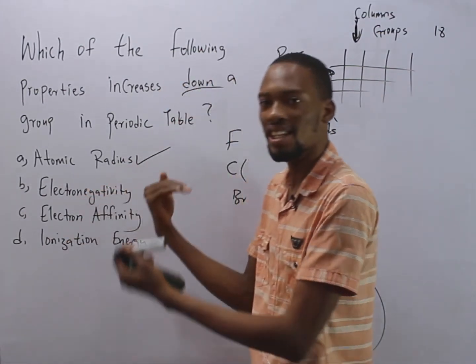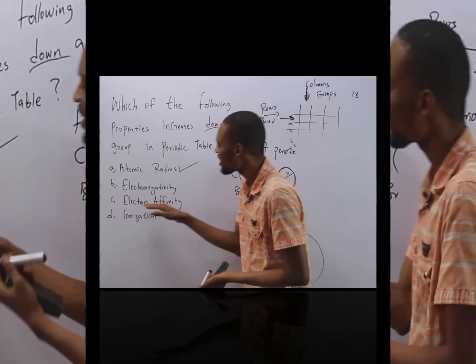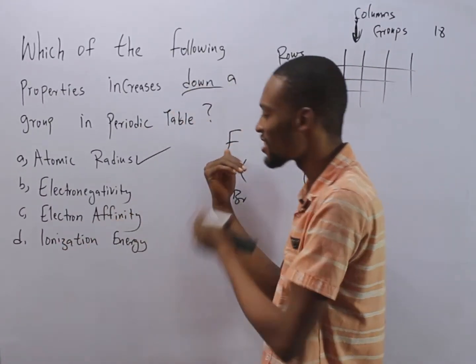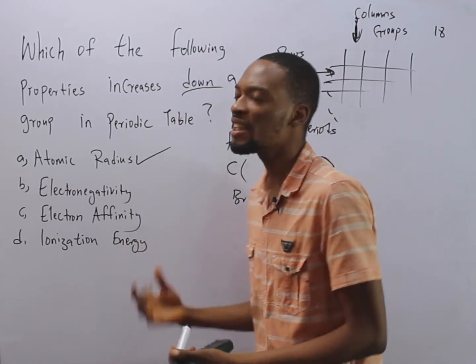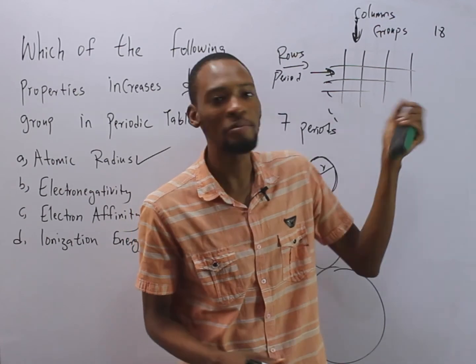Electronegativity increases across the period. Electron affinity increases and ionization energy increases. So these are the properties of elements in the periodic table.